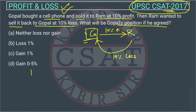Suppose Gopal bought the mobile for 100 rupees. You all know why we consider 100 — because the calculation is easy. In percentage questions, we normally consider prices as multiples of 100. So Gopal bought the cell phone for 100 rupees.